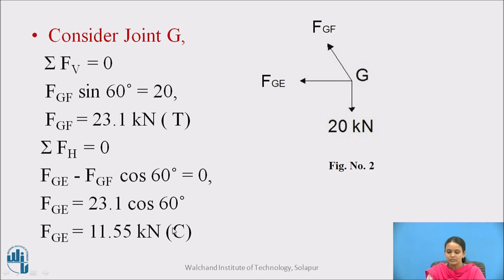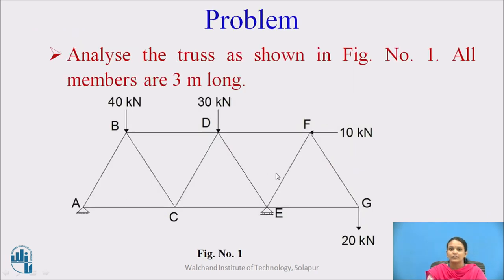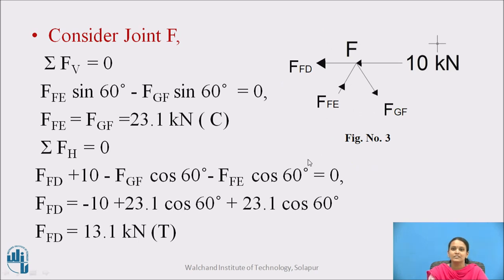When moving to the next joint, you must carry forward the nature of force already determined. After analyzing joint G, we go to joint F because the forces in members GF and GE have been calculated. Joint E cannot be analyzed yet as it has four unknowns: vertical reaction, force in EF, force in ED, and force in EC. So we proceed to joint F, where one external force of 10 kN acts and force in member GF is already known.